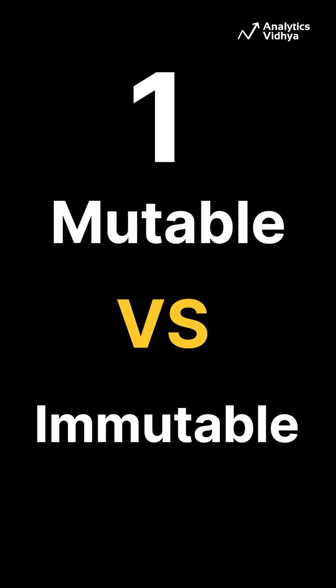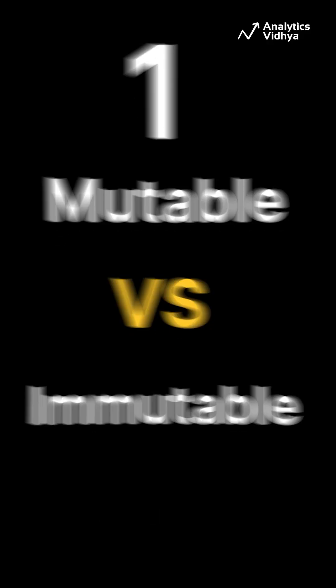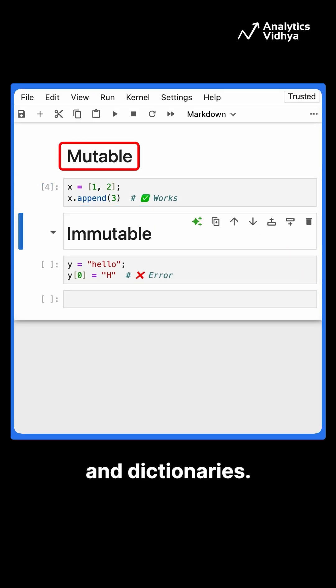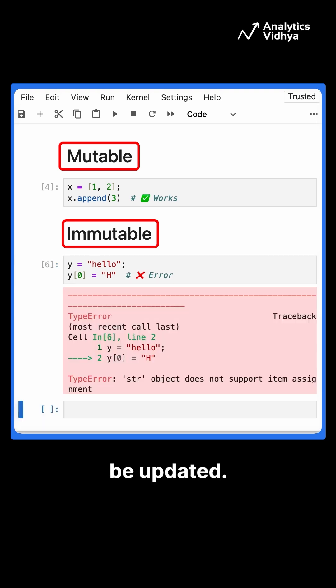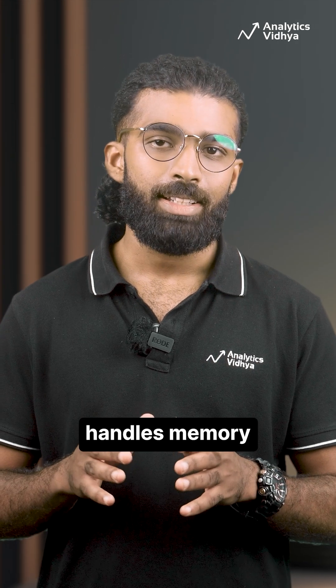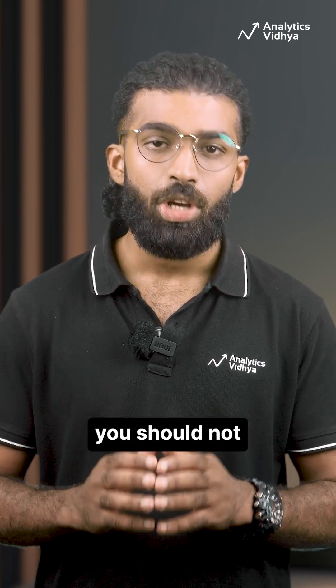First, we have the difference between mutable versus immutable objects in Python. Mutable objects can be updated once defined — for example, lists and dictionaries. Whereas immutable objects cannot be updated — for example, strings and tuples. Since Python handles memory differently for each, you should not be confused between them.